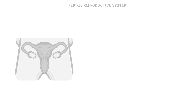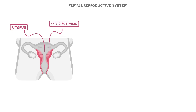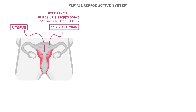Before we dive into the details of the menstrual cycle, let's take a quick look at where it all takes place — the female reproductive system. In the middle here is the uterus, surrounded by the uterus lining, which is important to remember because it's this structure that builds up and breaks down during the menstrual cycle.